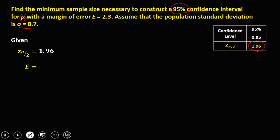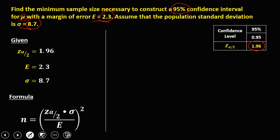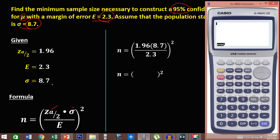the confidence coefficient is 1.96. The margin of error is 2.3 and the population standard deviation is 8.7. To solve for the sample size, it's the square of the confidence coefficient 1.96 times the population standard deviation 8.7, then divide by the margin of error 2.3. So we have 1.96 times 8.7, then divide by 2.3, which gives 7.4139.